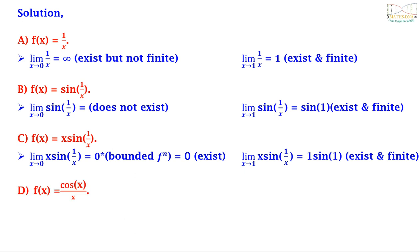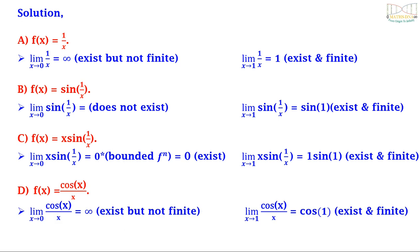For option D, f(x) = cos(x)/x: the limit as x tends to 0 of cos(x)/x equals infinity — it exists but is not finite — and the limit as x tends to 1 of cos(x)/x equals cos(1), which is existing and finite. Since the limit as x tends to 0 is not finite, option D is not true. Therefore the correct answer for Example 4 is option C.